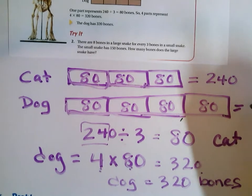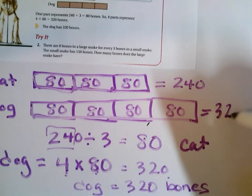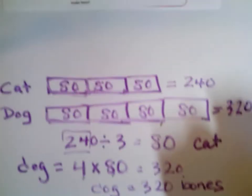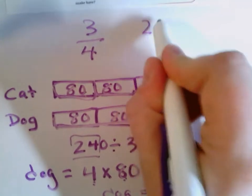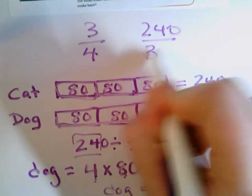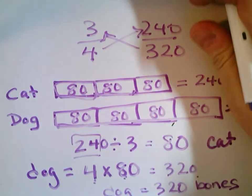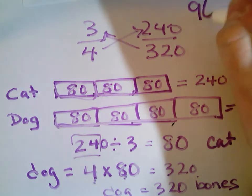And does that make sense too? Yes, that makes sense because the cat has 240, dog has 320. And I can even double check to see if my ratio is correct. Three to four, 240 to 320. I multiply this way and this way. I would get the same answer. I would get 960.